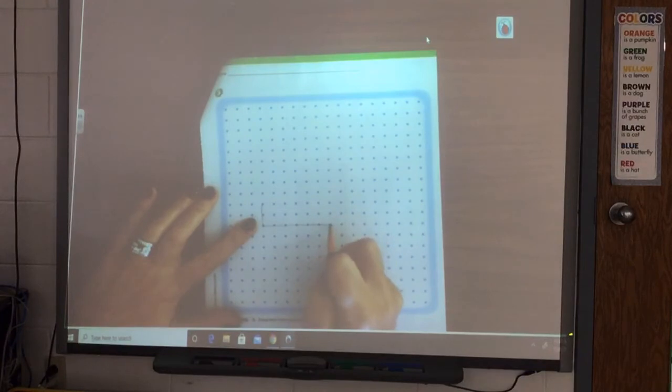Then I'm going to go back up: one, two, three. And then I'm going to close my rectangle. So it has two short sides, two long sides.